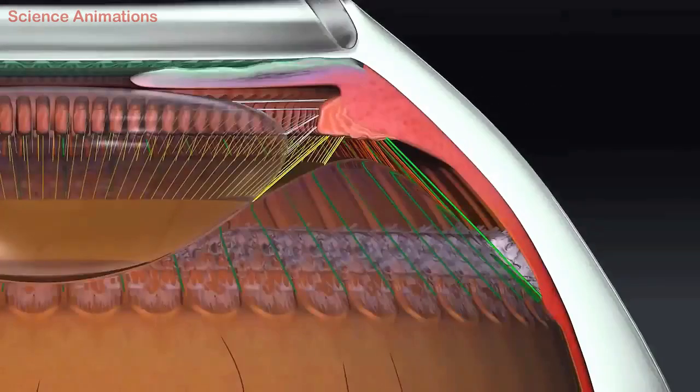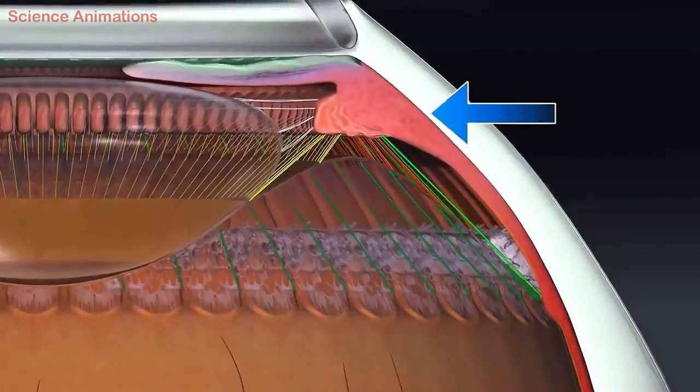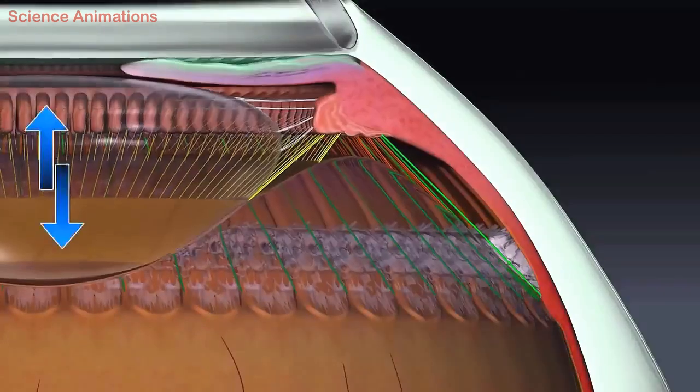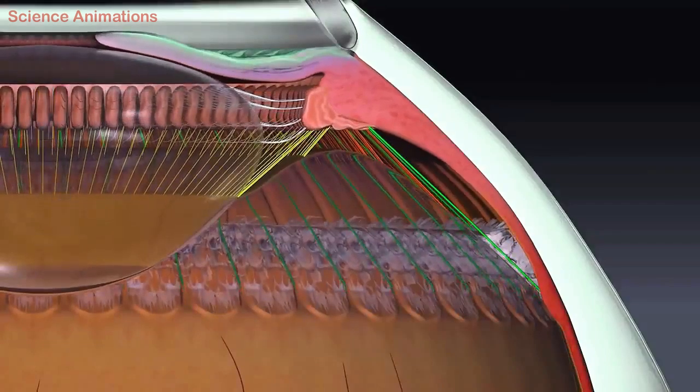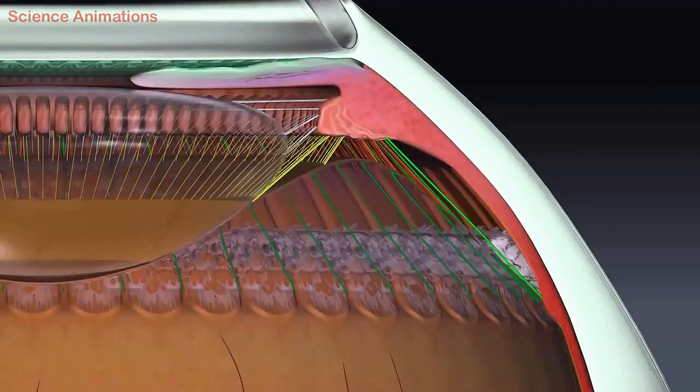Behind the iris is the lens which changes its shape to focus light onto the retina. The lens changes its size through the action of ciliary muscles. To focus on nearby objects, the lens becomes thicker. To focus on distant objects, it becomes thinner.